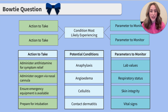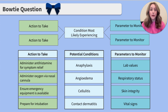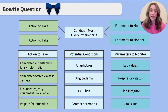Now onto the bowtie part of this question. You can see we have green boxes with matching green actions to take on the left, blue boxes with matching parameters to monitor on the right, and light blue potential conditions in the middle. When taking your NCLEX exam, you'll have a screen similar to this one where you'll be able to select answer choices from these columns and drag the corresponding answers into place. Take a second to pause this video, decide which answer choices you'd fill in the blank boxes with, and when you're ready, press play and we'll review together.